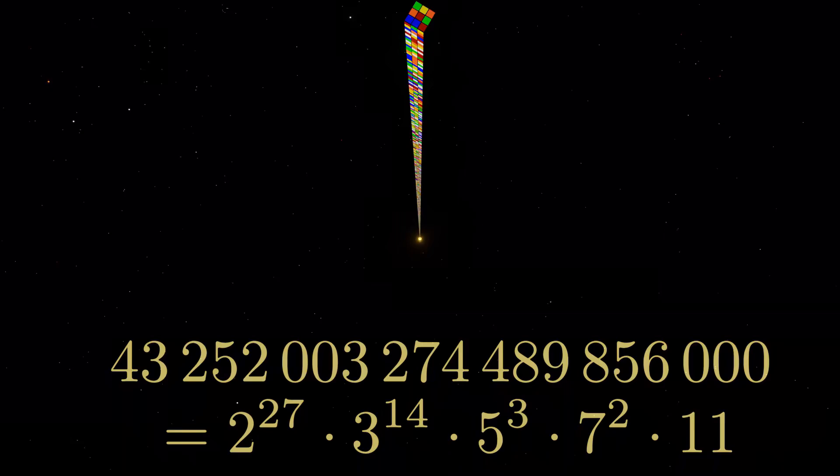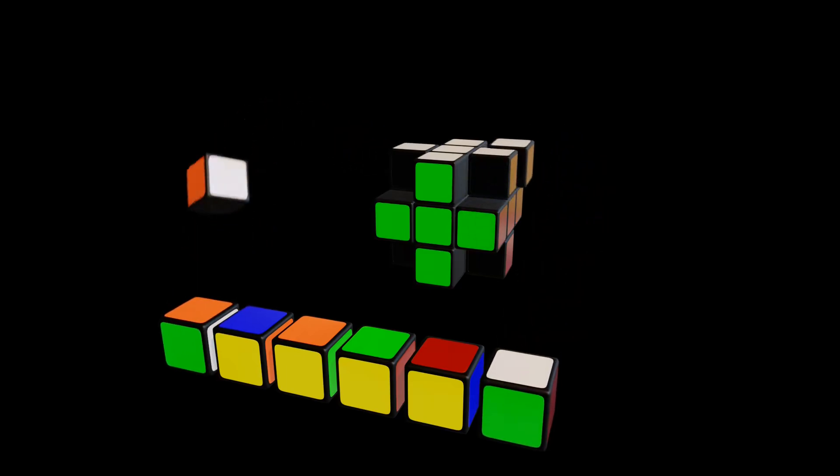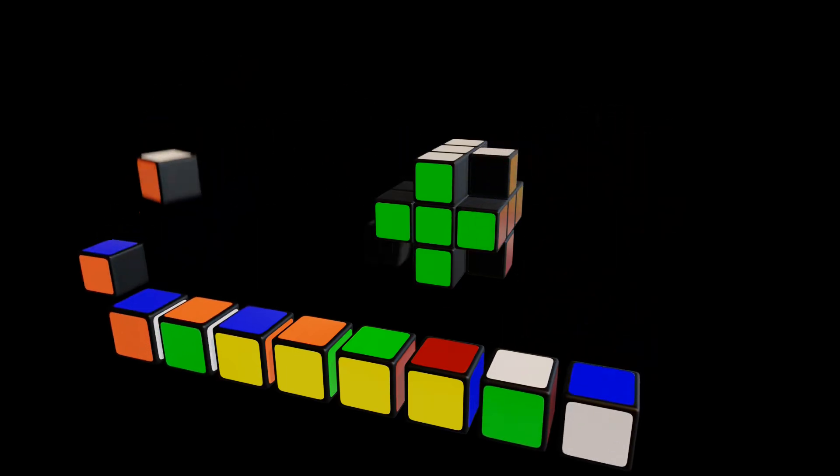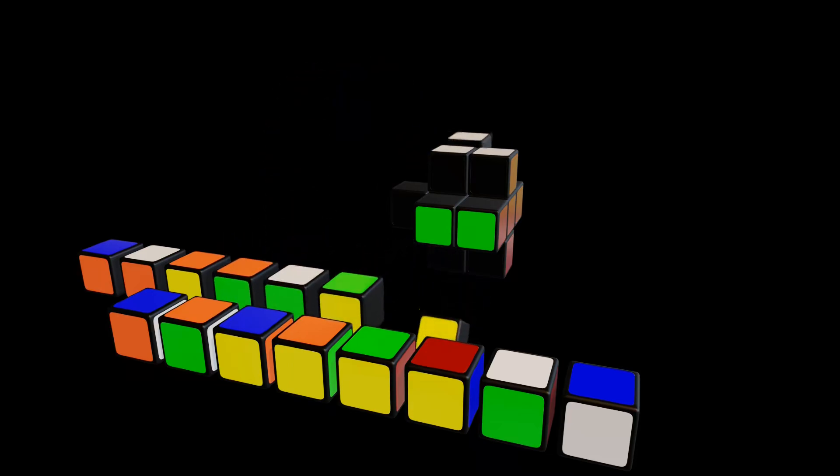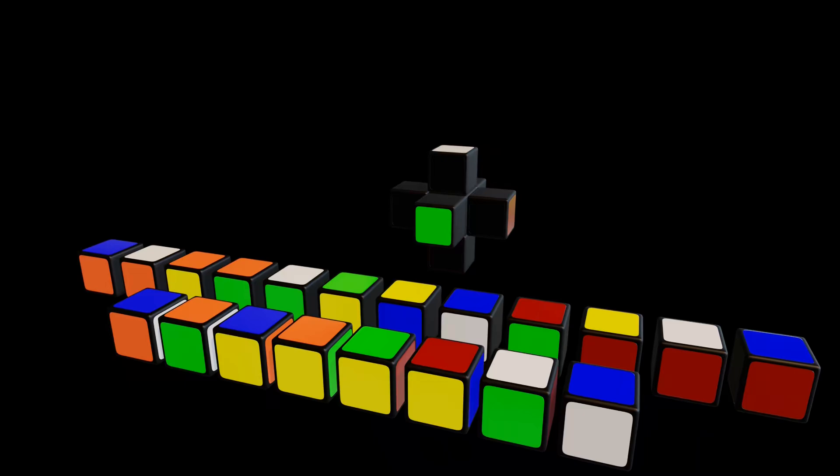The process of counting all possible configurations actually starts with a screwdriver. By taking the magic cube apart, we reduce it to its 8 corner pieces and 12 edge pieces. Once disassembled, the real question becomes how many different ways can we put these pieces back together.